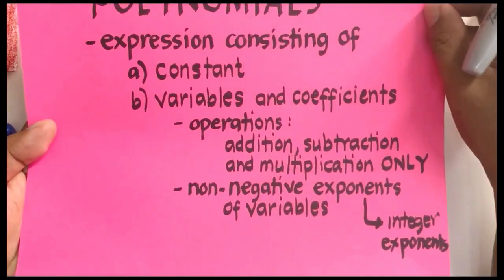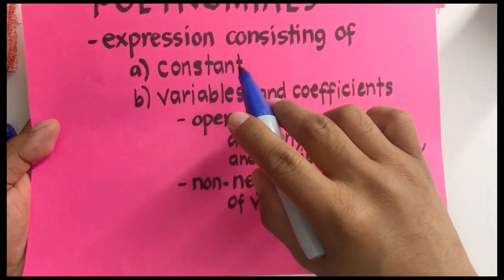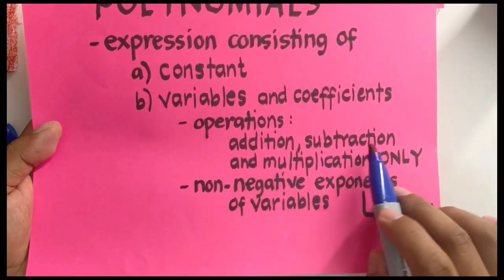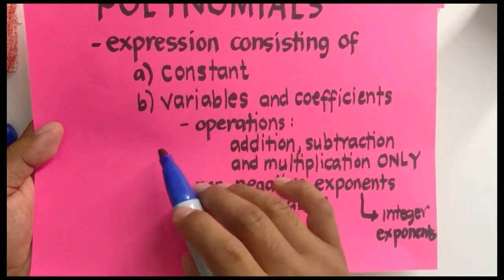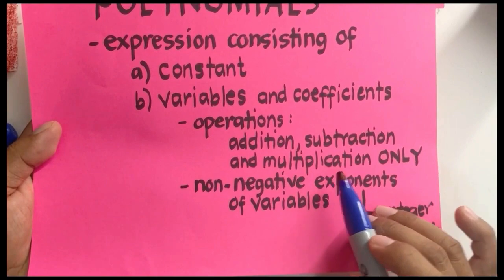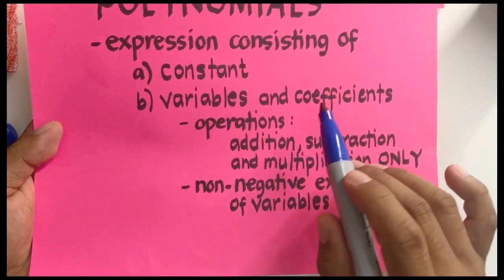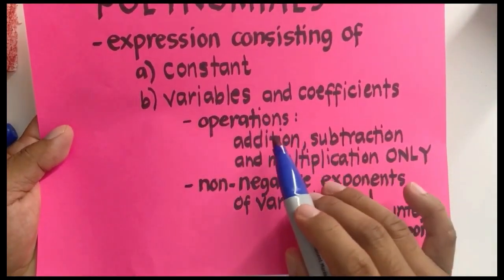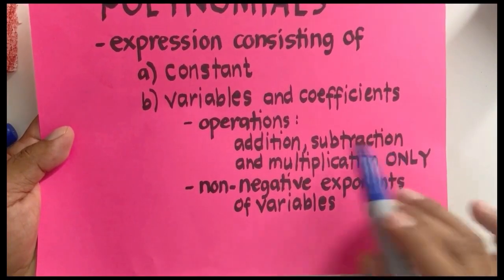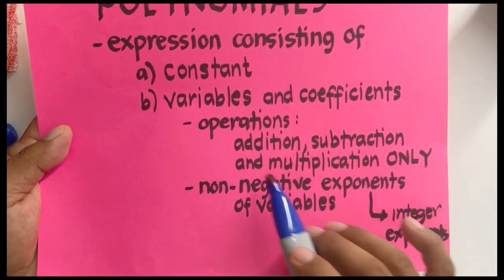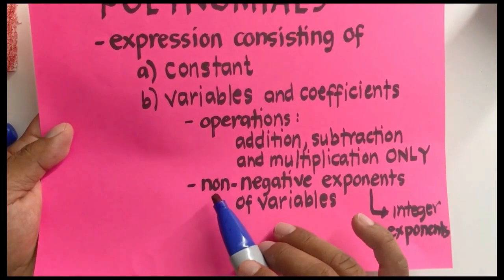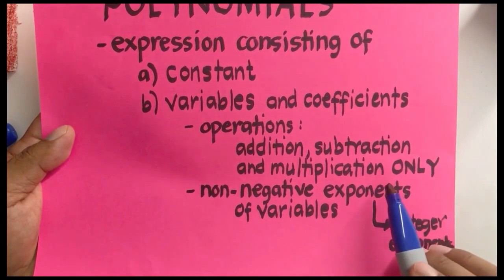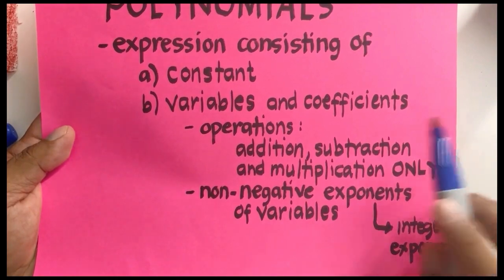To summarize the definition: a polynomial is an expression consisting of constants, variables with coefficients, and operations of addition, subtraction, and multiplication only. Division is not allowed because dividing variables results in a rational expression. We also avoid negative and fractional exponents, as those produce expressions that are no longer polynomials.